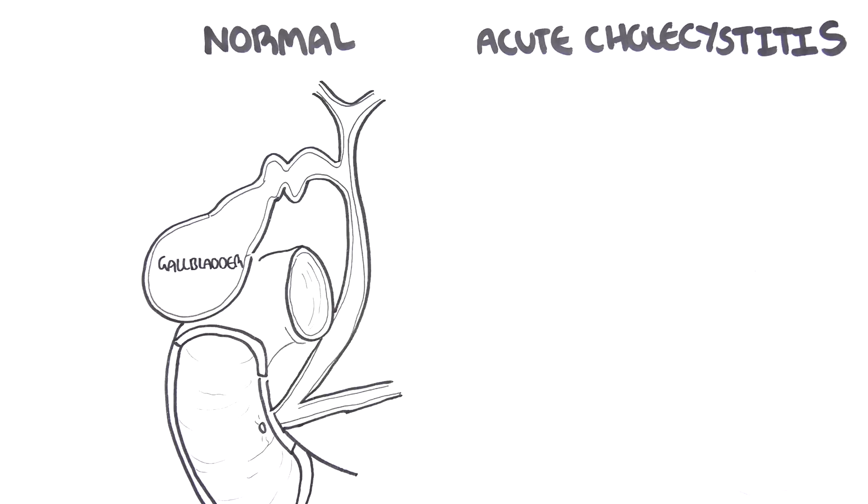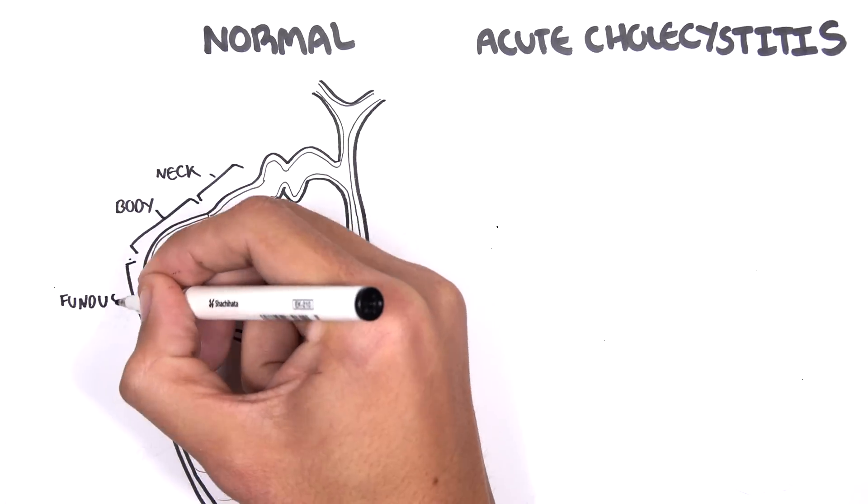Back to the anatomy. Here is the gallbladder. The body, the neck, and the fundus of the gallbladder.